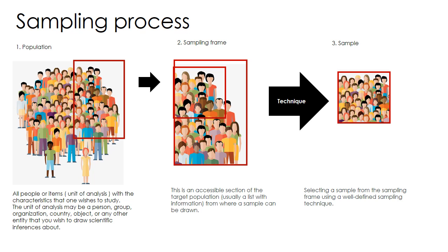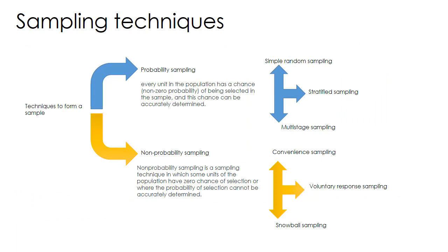What is the sampling process one has to follow in research? Firstly, you need to identify your population. From the population, you identify the sampling frame — the accessible section of your target population, usually the list of people you have access to. From the sampling frame, you identify your sample. There are multiple techniques to do this, and that is what we will look into next: sampling techniques.